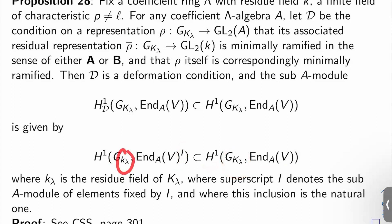So what is little k lambda here? It's just the residue field of big K lambda. And what does it mean to take N_AB to the I? The superscript I just denotes the sub A module of elements fixed by inertia. And then this inclusion is the natural one coming from basic algebraic number theory.